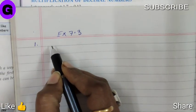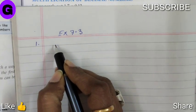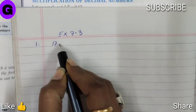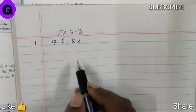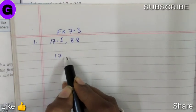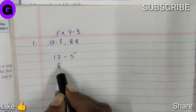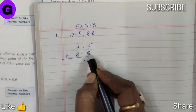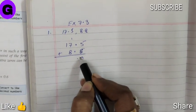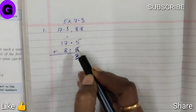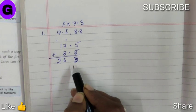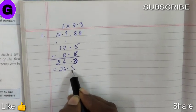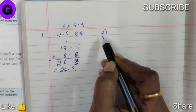So number one is addition. We have to add 17.5 and 8.8. So first we have to arrange 17.5 and 8.8. That comes down to 13. 26.3 is the answer.